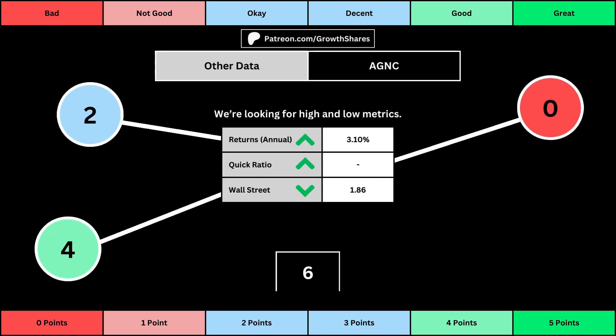The fourth set of metrics looks into other relevant data. First is the stock's performance over a set period of time — usually 10 years, but if the stock doesn't go that far back, we go with the earliest data up to 10 years. The quick ratio is basically how easy it is for the business to pay off its short-term obligations; we want that high so that it's easy to get rid of those debts. And then, Wall Street is the average consensus rating Wall Street analysts give the stock, from a strong buy of 1 to a strong sell of 5. Again, the better values get a higher point total.